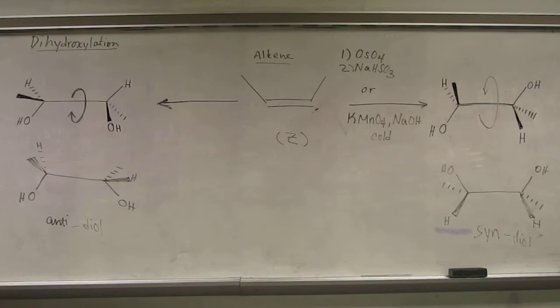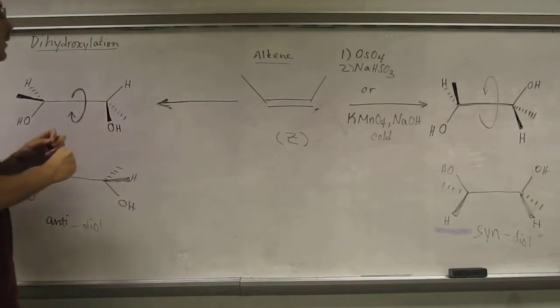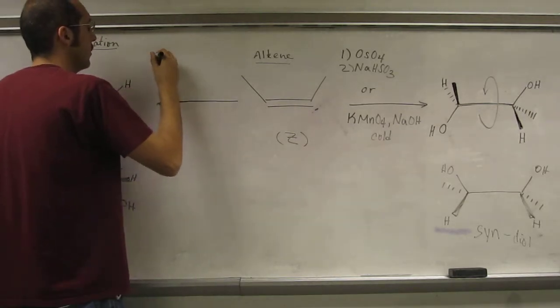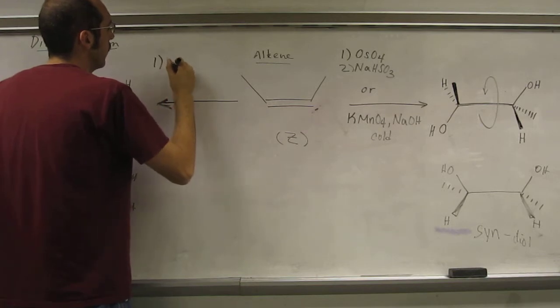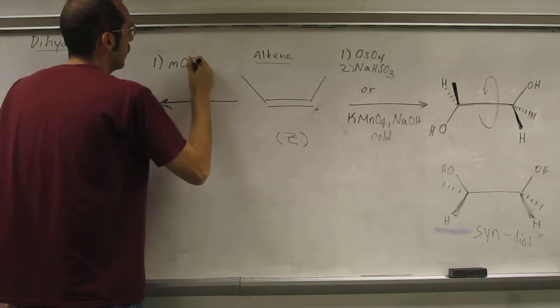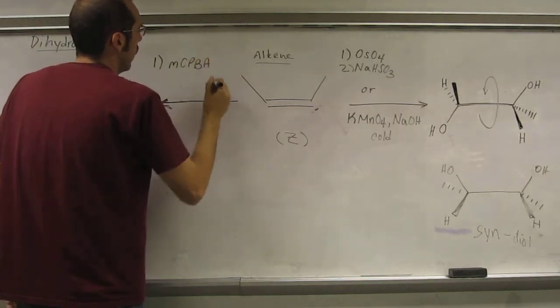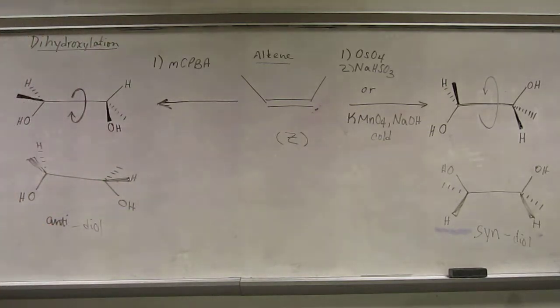So anti-diol, how do you do that? There's the real fast, easy way. First MCPVA it. And that's going to give you the epoxide, the three-membered cyclic ether.